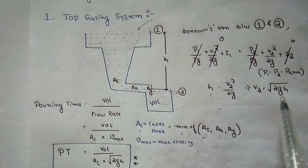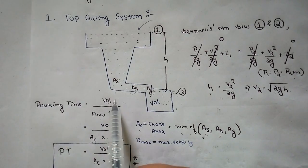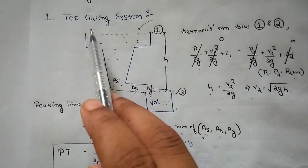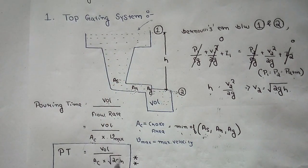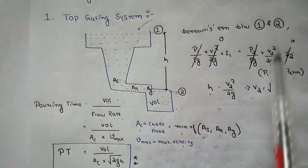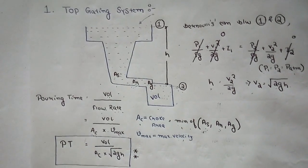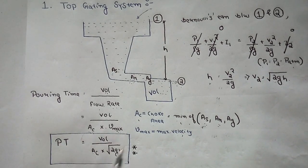So Vmax = V2 = √(2gH). Therefore the pouring time for the top gating system is: PT = Volume / (AC × √(2gH)). To summarize: pouring time equals volume divided by flow rate; flow rate equals AC × Vmax; Vmax = √(2gH); and AC is the choke area, which is the minimum of AS, AR, and AG.